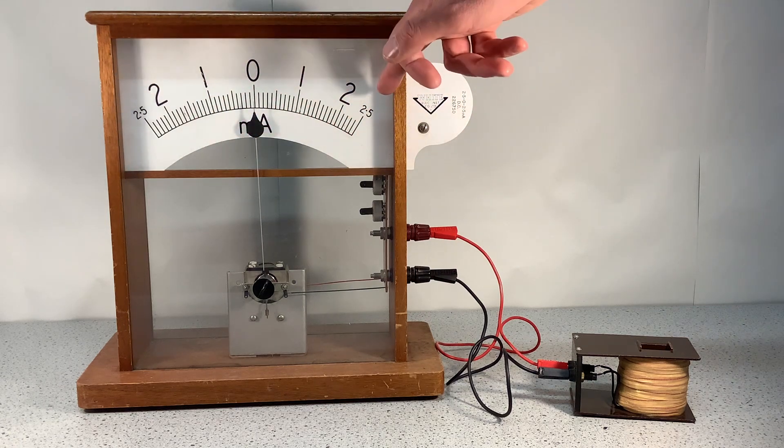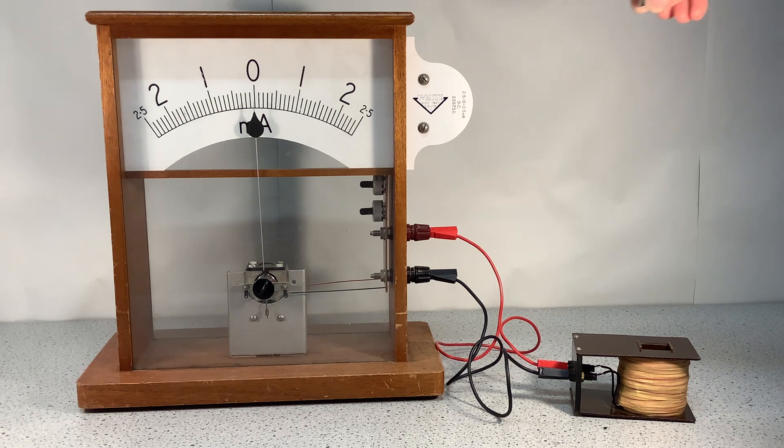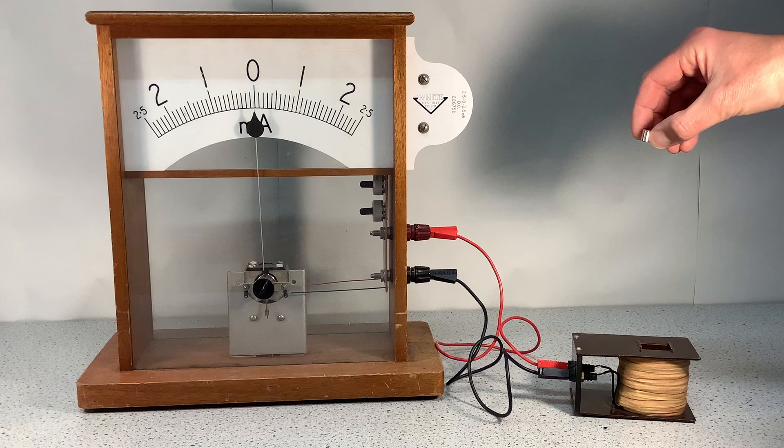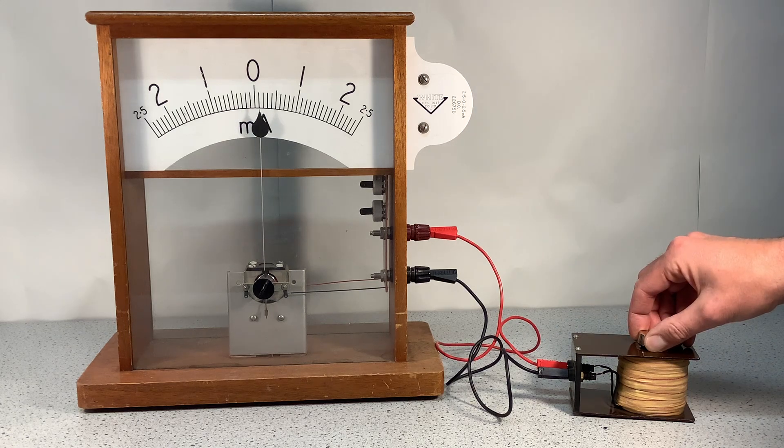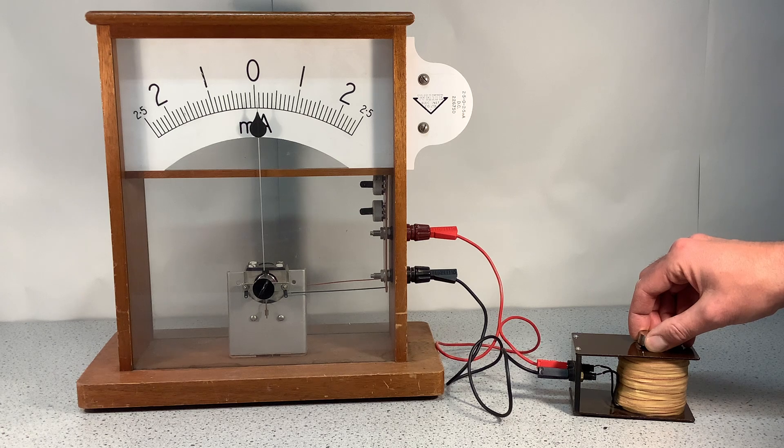All I'm going to do is move a magnet in my hand towards the coil and see what happens. And hopefully you saw that a current flowed for a short amount of time because I induced a potential difference by moving the magnet.